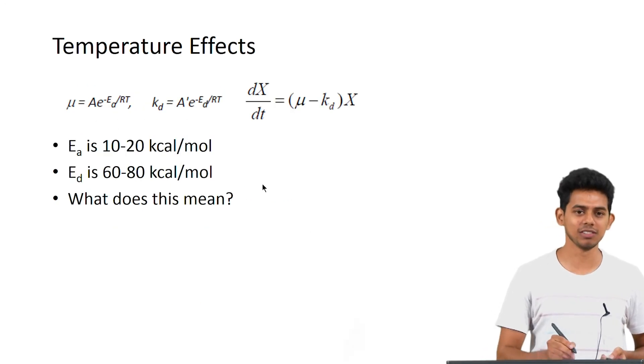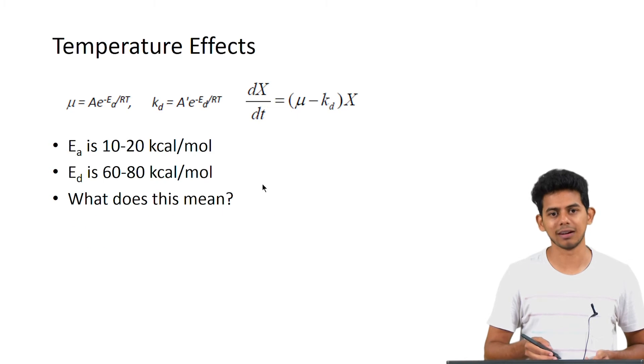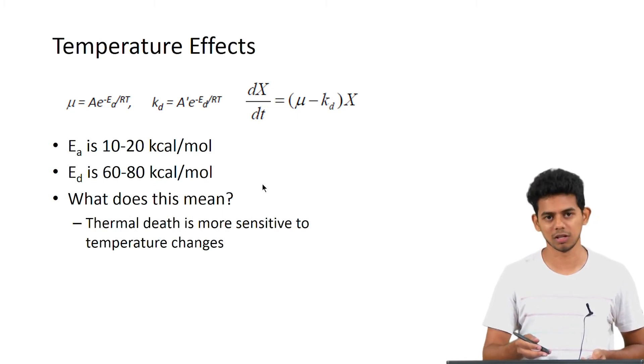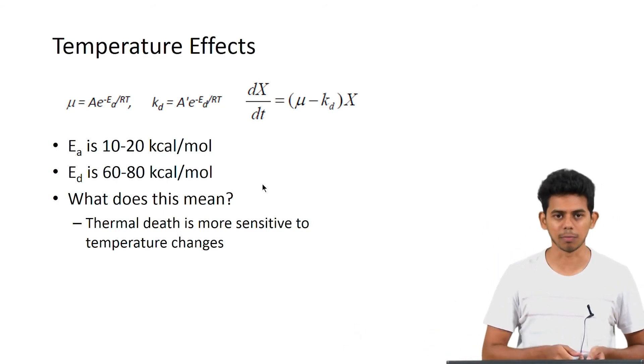The activation energy for growth (Eg) is usually around 10 to 20 kcal per mole and for death (Ed) is around 60 to 80 kcal per mole. From this we can see that thermal death is more sensitive to temperature changes. Having the right temperature range is quite important.